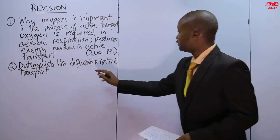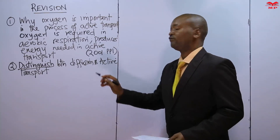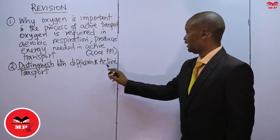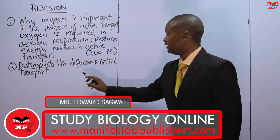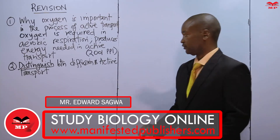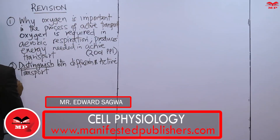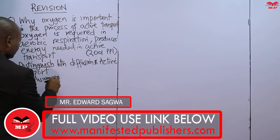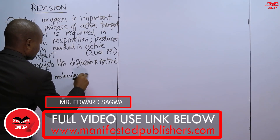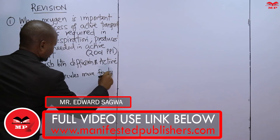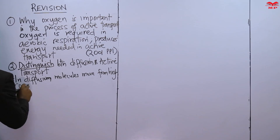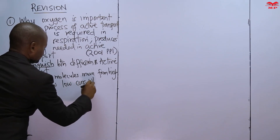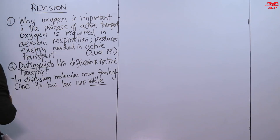In diffusion, molecules or particles move from a region of high concentration to a region of low concentration. The word 'while' is very important — that is how you distinguish. While in active transport, molecules or ions move from a region of low concentration to a region of high concentration.